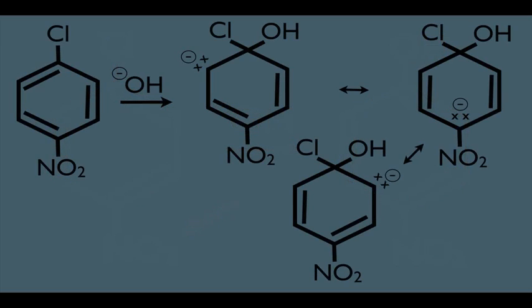Going back to the mechanism, notice where the lone pairs of electrons end up in these resonance structures. They end up para to the original carbon bearing the Cl, and also ortho to the Cl. So in order to help drive this reaction, we not only want electron withdrawing groups, but we want them present at the ortho and para positions — ortho and para to the original leaving group such as Cl on the benzene ring. Electron withdrawing groups in those positions stabilize these intermediates.